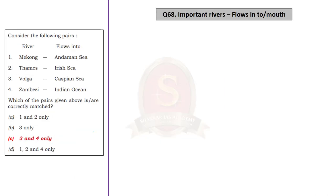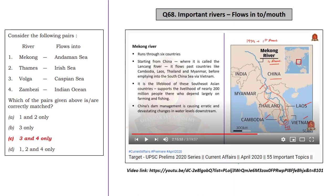This question is based on important rivers. We covered the Mekong River in our Target Prelim Series for April 2020, clearly stating that the Mekong River empties into the South China Sea. With this information, we can say that the first pair is incorrectly matched. If you know this, you can eliminate options A and D and choose from the remaining two options, increasing your probability of correctly attending this question to 50%.